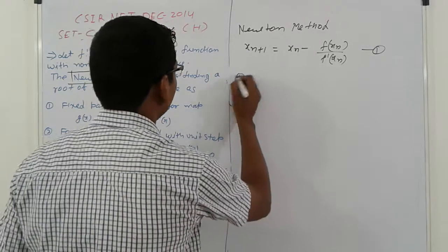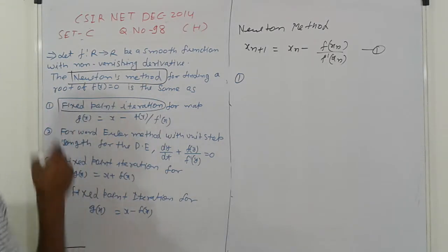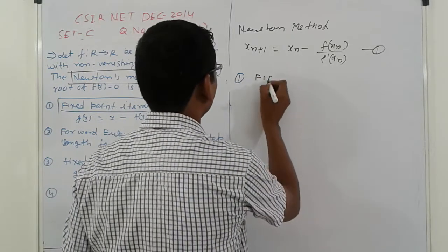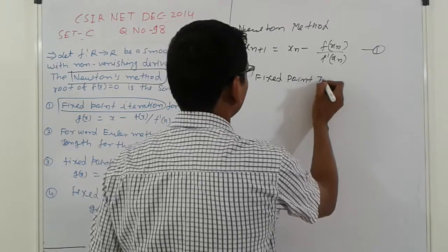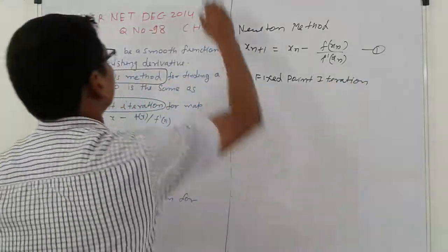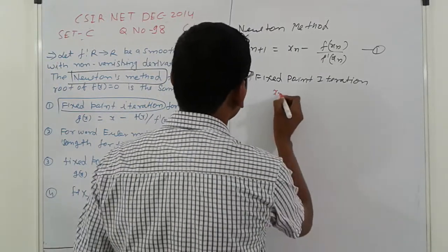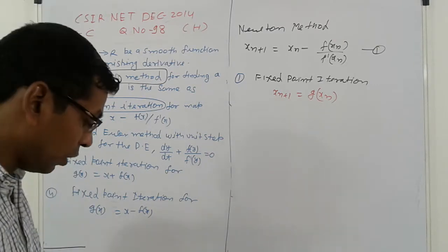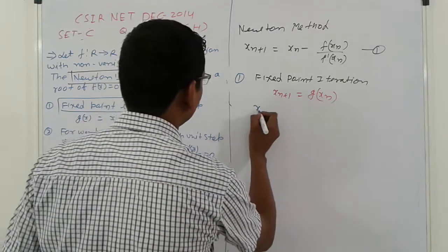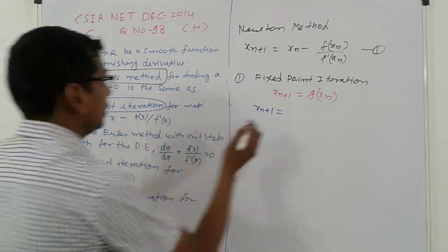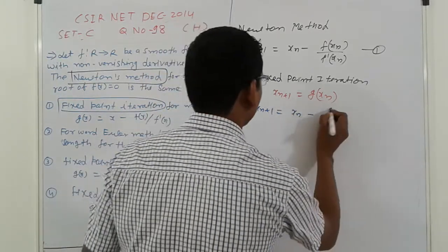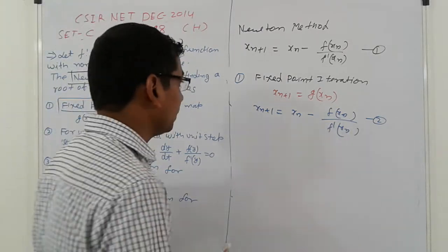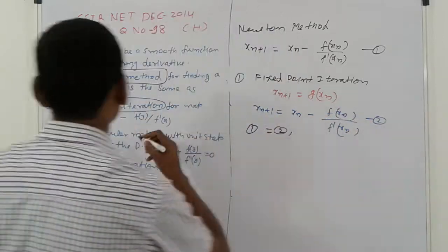Let's check option one: what is fixed point iteration? In fixed point iteration, x_{n+1} is equal to g(x_n). Here, Newton's fixed point iteration rule follows — so g(x_n) replaces x_n, meaning x_{n+1} = x_n minus f(x_n) divided by f'(x_n). So equation 1 equals equation 2, meaning the first option is correct.